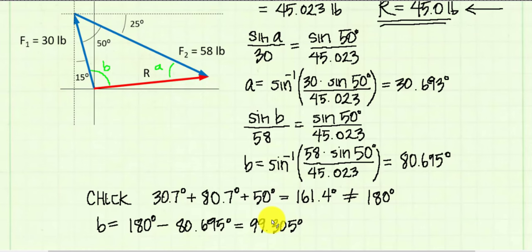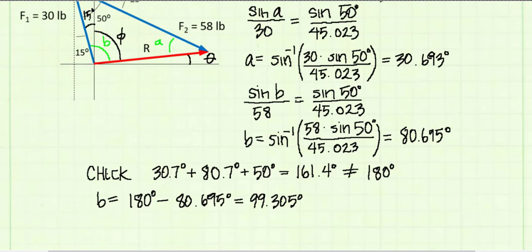Now we still need to find the direction of our resultant force vector. I'm going to label it in the figure and call that angle theta. I'm going to use angle B to find theta. I'm going to call this angle that I've drawn here as angle phi, and that's going to be equal to angle B minus this interior angle, which is 15 degrees. I get that phi is equal to 84.305 degrees.